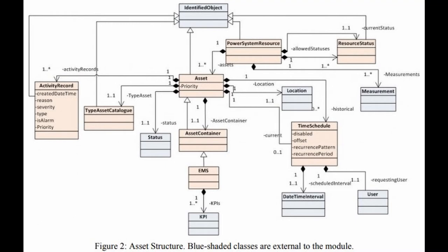The reason I wanted to share this image was to show what was part of the core model and what were the extensions that we added. What's pictured in the blue-ish color are our extensions versus what's in the pink-ish color, which is the core model. You can see things such as asset, activity record, or power system resource — really quite generic, which is the kind of thing the core model included. We added extensions such as KPIs, users, locations, and measurements — more concrete than what we originally had to work with.